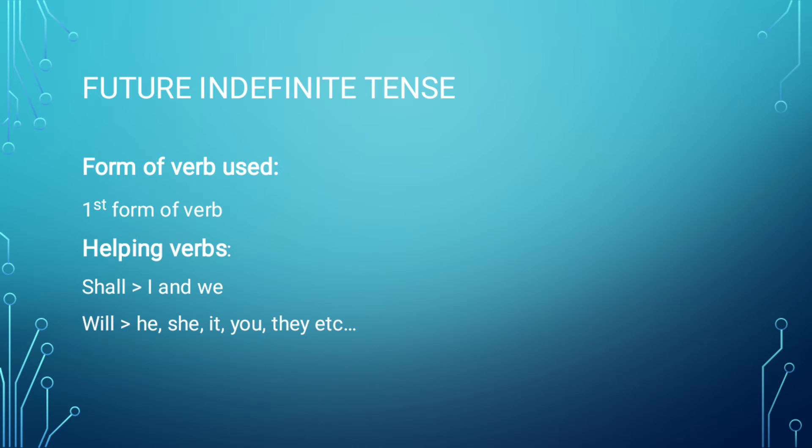Next is form of verb. The form of verb that we use in this tense is always first form of verb. And then two helping verbs are used: will and shall. Now, shall is used with I and we only. Just I and we will take shall.